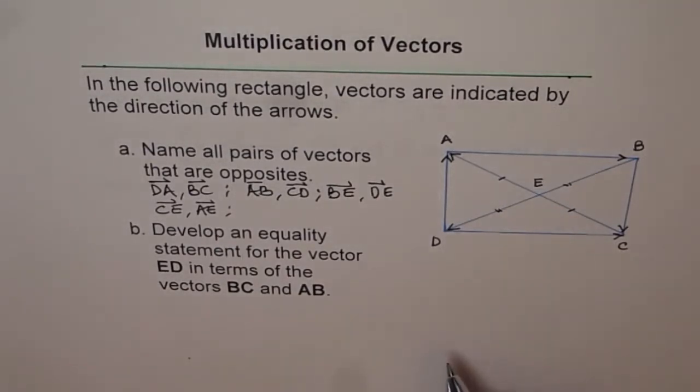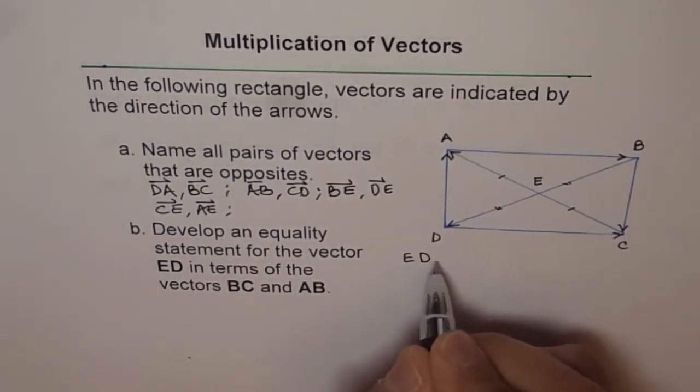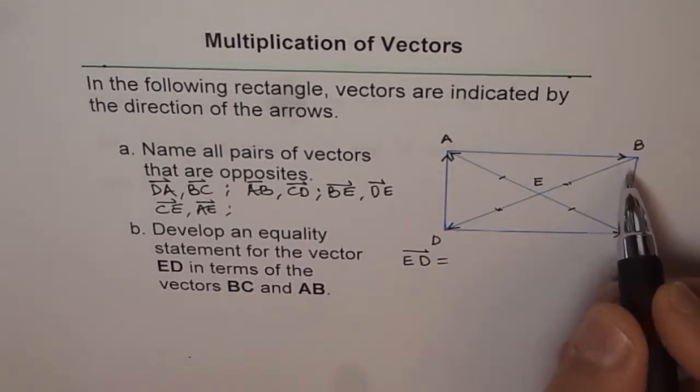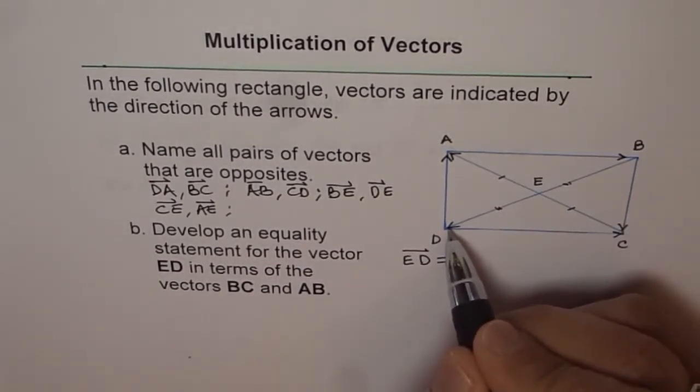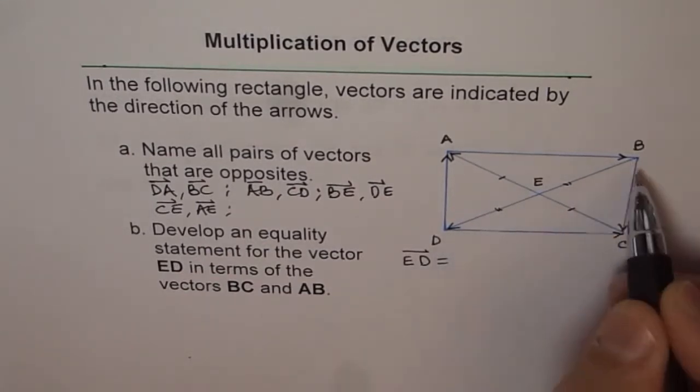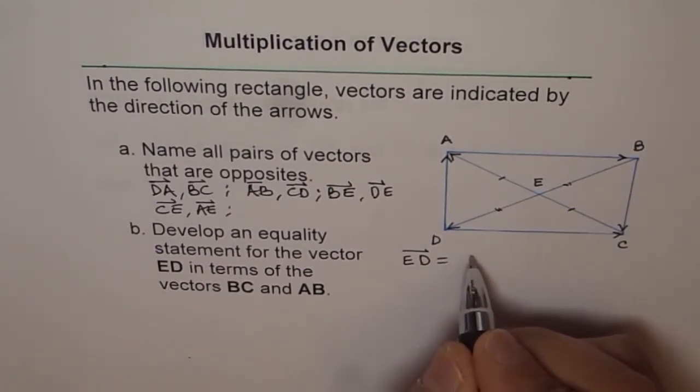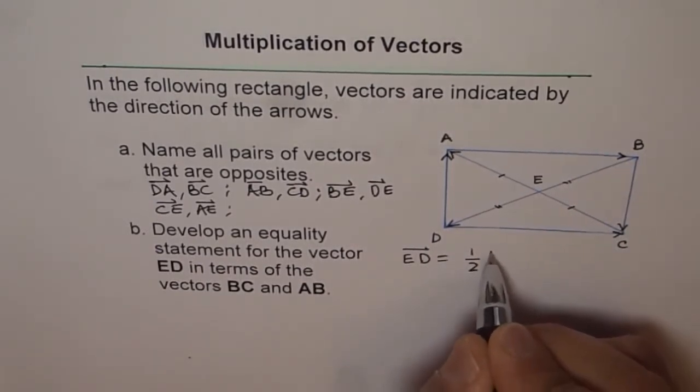Now, the best way is we can say E to D is equal to, as you can say, E to D is actually same as B to E and E to D is half of B to D, correct? So, we can write this E to D as half of B to D, correct?